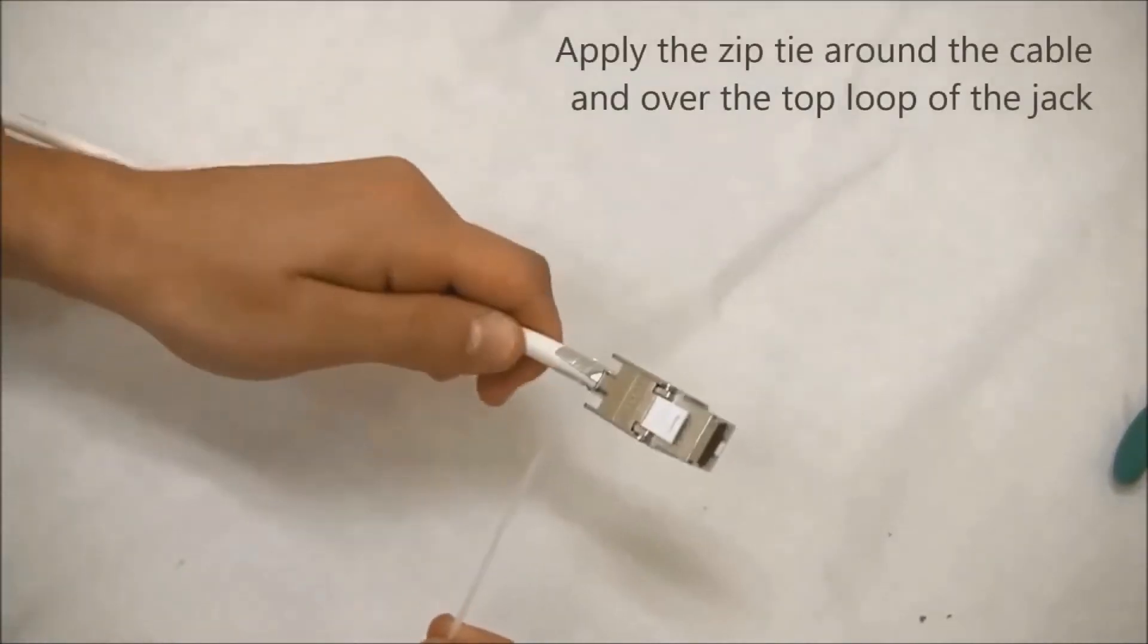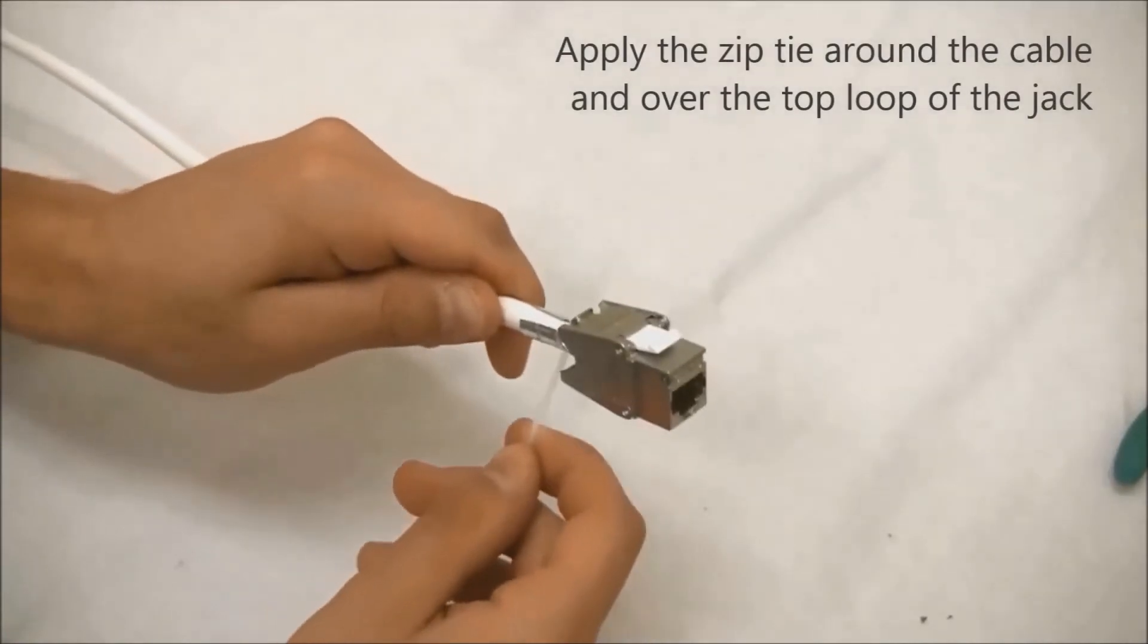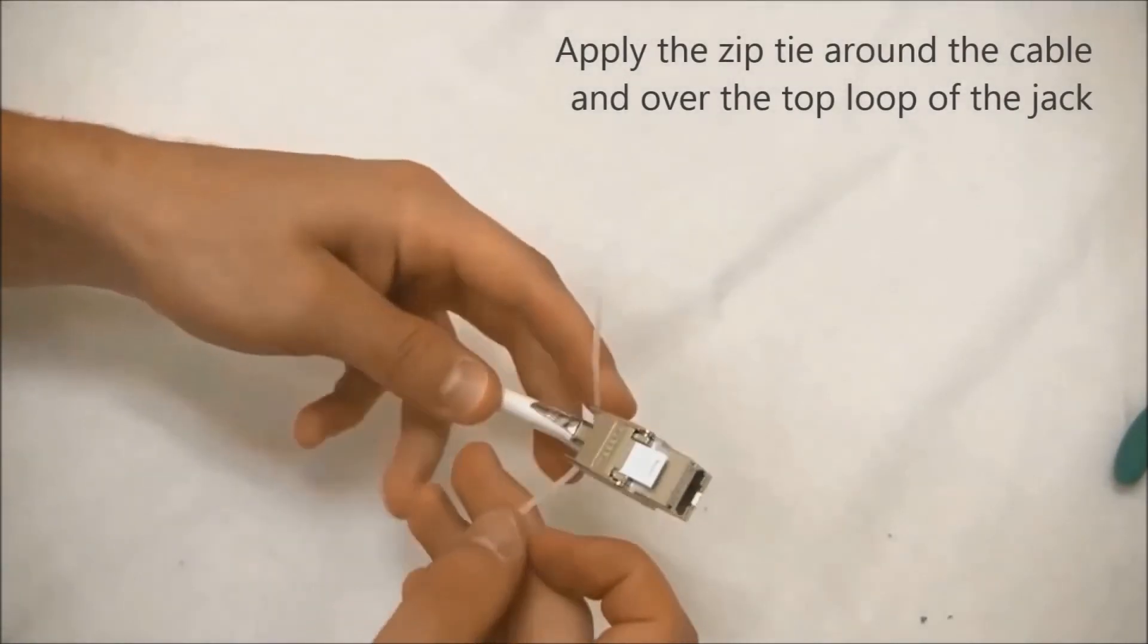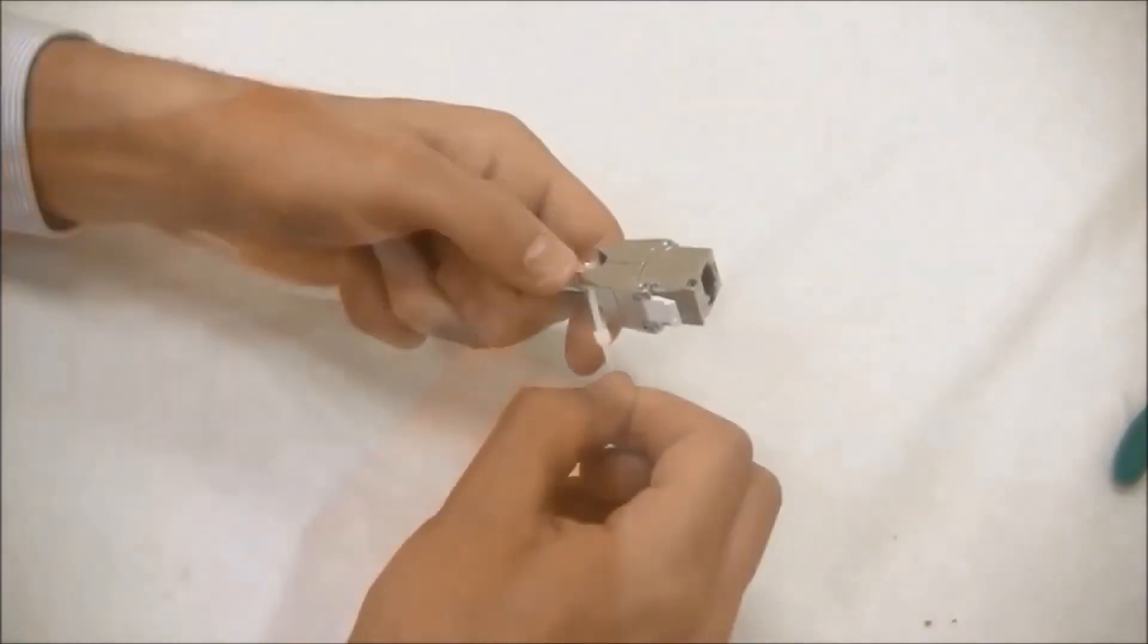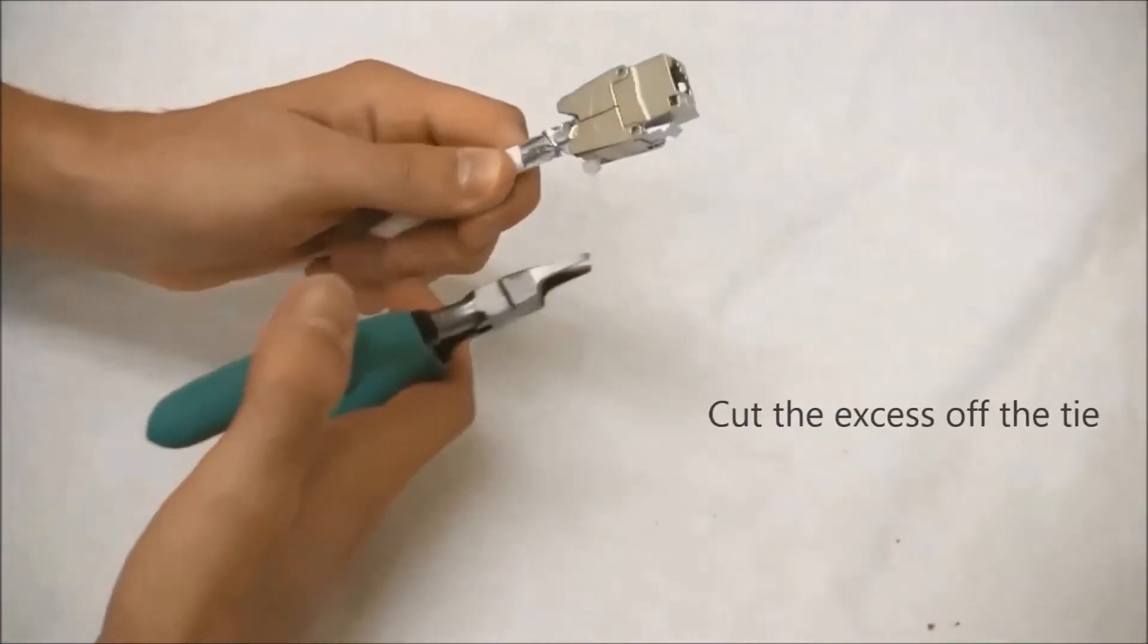Lastly, apply the zip tie around the cable and over the loop on the top of the jack in order to maintain ground continuity. Using the wire cutters again, snip the excess off of the zip tie once tightened.